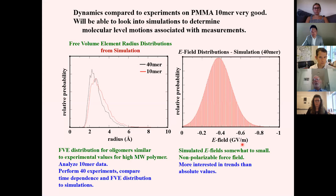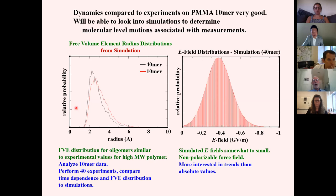Coming out of the validated simulation, Chung-Wen can start calculating — for example — the probability versus radius of the free volume elements. When we first saw the simulation result, we noted it doesn't look very Gaussian. Initially we thought our model should give a Gaussian distribution, but the simulation showed otherwise. He can also calculate electric fields, which becomes really important for understanding the correlations we want to explore.